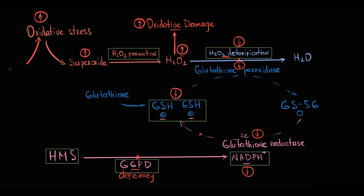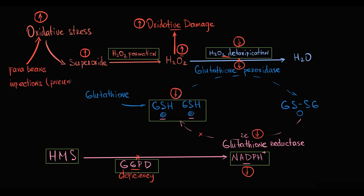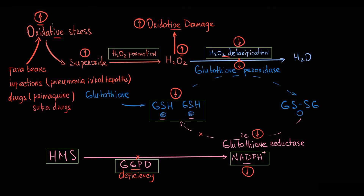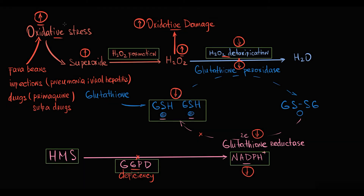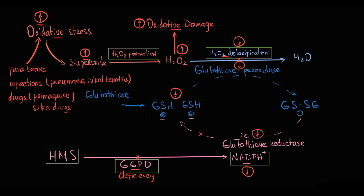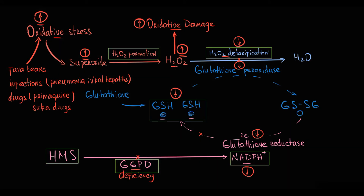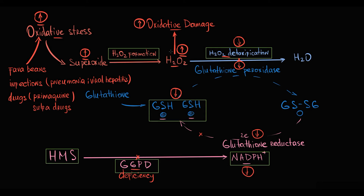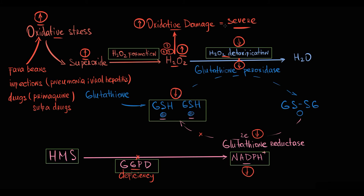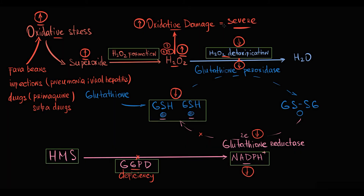The most well-known triggering agents are fava beans, infections such as pneumonia or viral hepatitis, and drugs such as primaquine and sulfa drugs. They all induce oxidative stress, causing an increase in generation of reactive oxygen species — initially superoxide, which is then converted into hydrogen peroxide. This leads to massive production of hydrogen peroxide that overwhelms the already limited glutathione detoxification capacity. As a result, massive amounts of hydrogen peroxide accumulate inside the cell, causing severe oxidative damage. Glucose-6-phosphate dehydrogenase deficiency therefore creates a severe peroxidative state in all tissues.